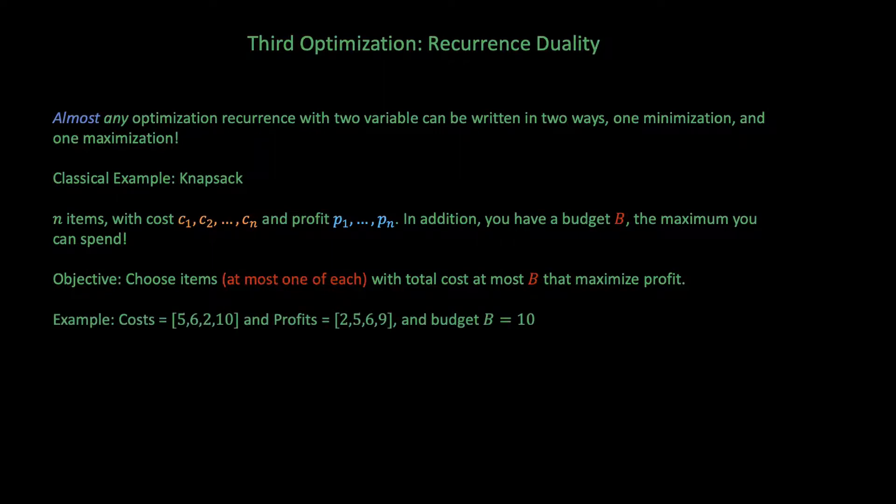For example, suppose there are 4 items with costs 5, 6, 2, and 10, and profits 2, 5, 6, and 9. Our budget is at most $10. We can buy items 2 and 3 with cost 6 plus 2, which is 8, and profit 5 plus 6 equals 11. You can quickly verify that it's impossible to get a bigger profit than 11 with a budget of just $10.